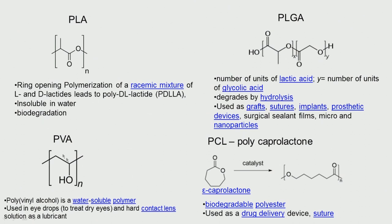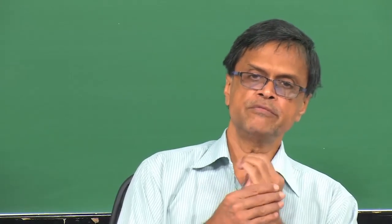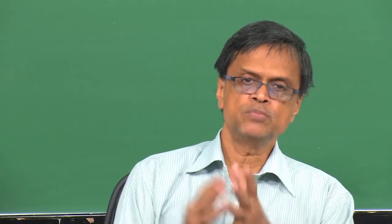Polyvinyl alcohol (PVA) is a water-soluble, FDA-approved, very hydrophilic polymer. It is used in eye drops and as a lubricant in hard contact lens solutions. PVA is a very good lubricant because it is water-soluble. It is also used to enhance mixing when combining hydrophobic and hydrophilic polymers.